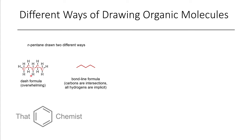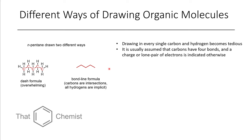The different ways we can draw pentane are shown here. We can draw it as a dash formula where we explicitly label every single carbon and hydrogen, but most of the time we prefer to draw it in the simplified bond-line formula, where we assume that each of the points are carbons and that there are four connections to carbon at any given time. The assumption is that the end of a line is a CH3, and two lines from one spot indicates a CH2 — these are implicit hydrogens.